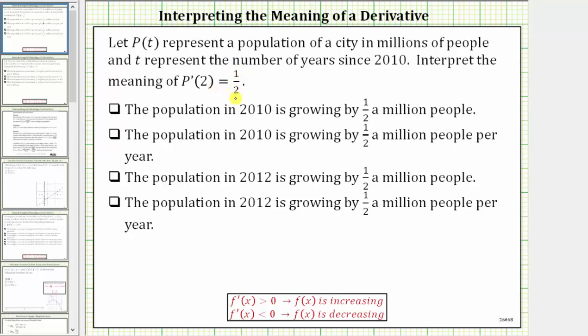Before we do this, let's also write this derivative function value using Leibniz notation. P'(2) equals dP/dt when t equals 2, which we're given is equal to 1/2.